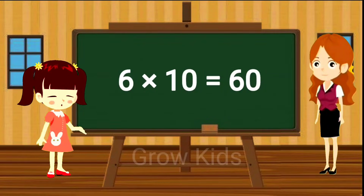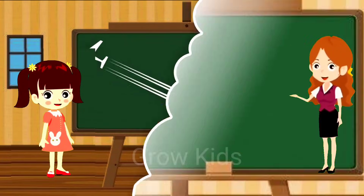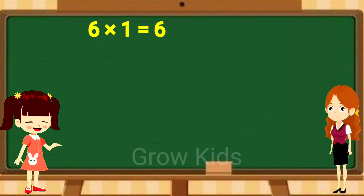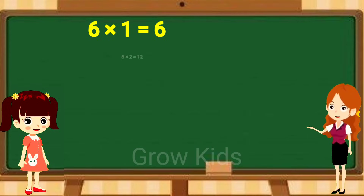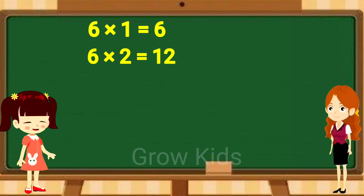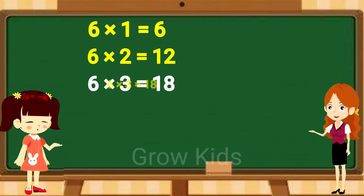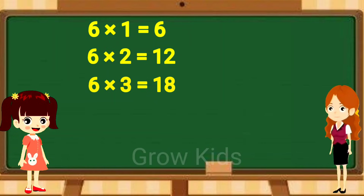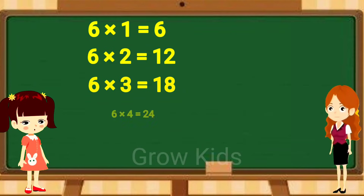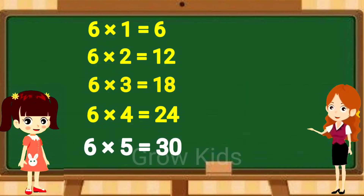Repeat once again. Six ones are six. Six twos are twelve. Six threes are eighteen. Six fours are twenty-four.